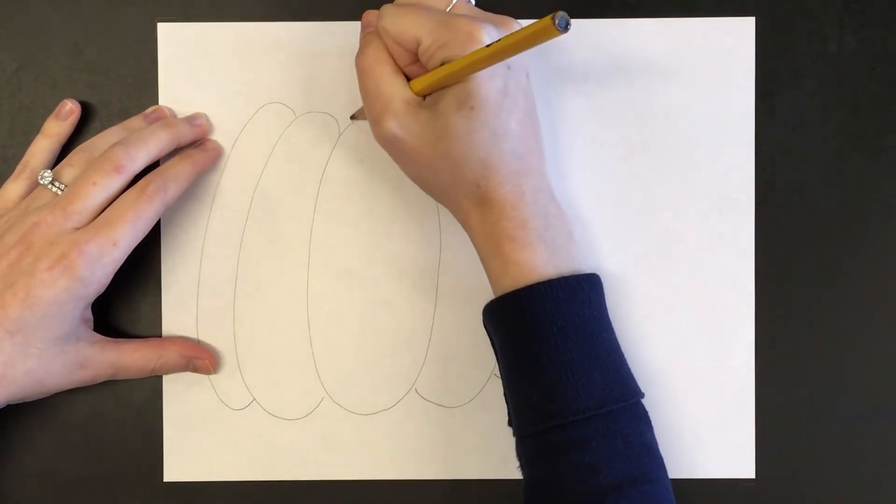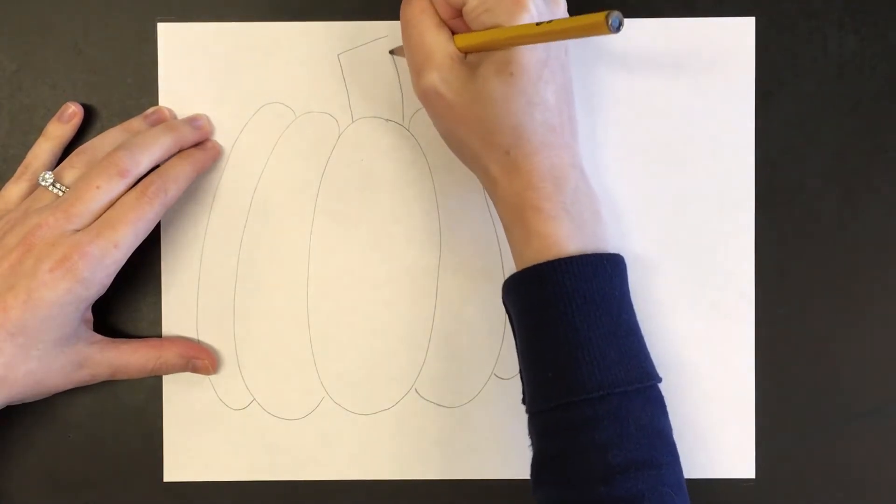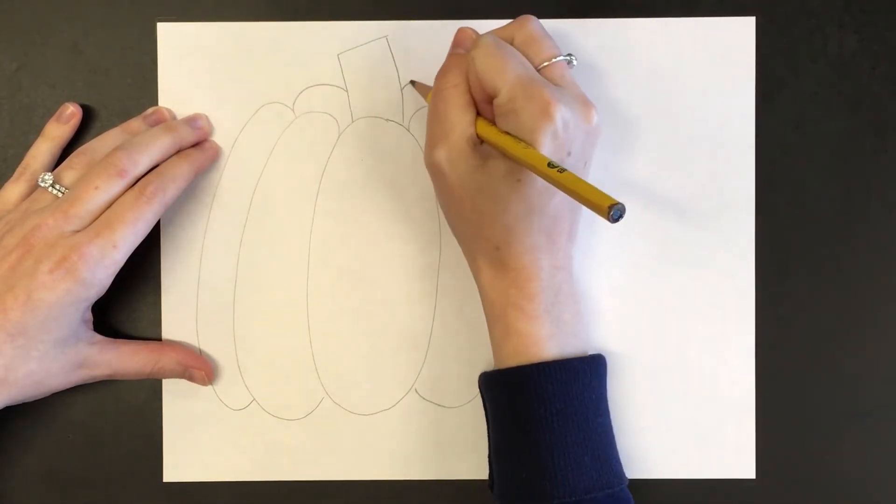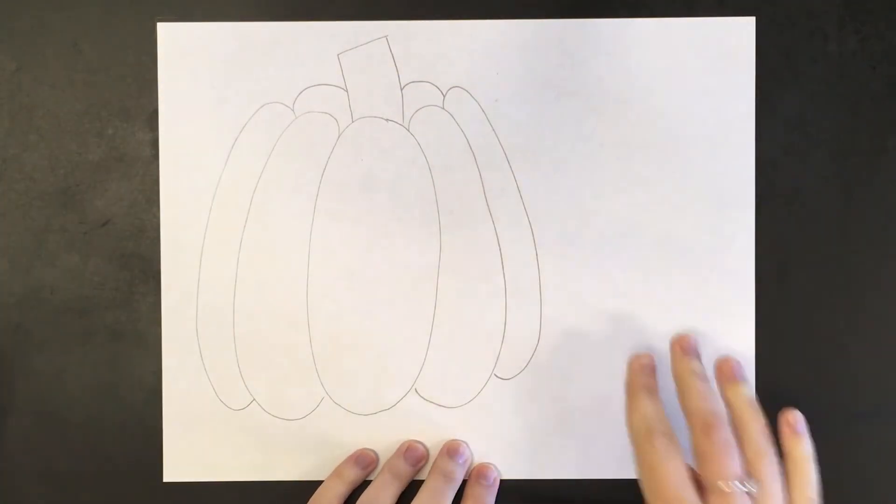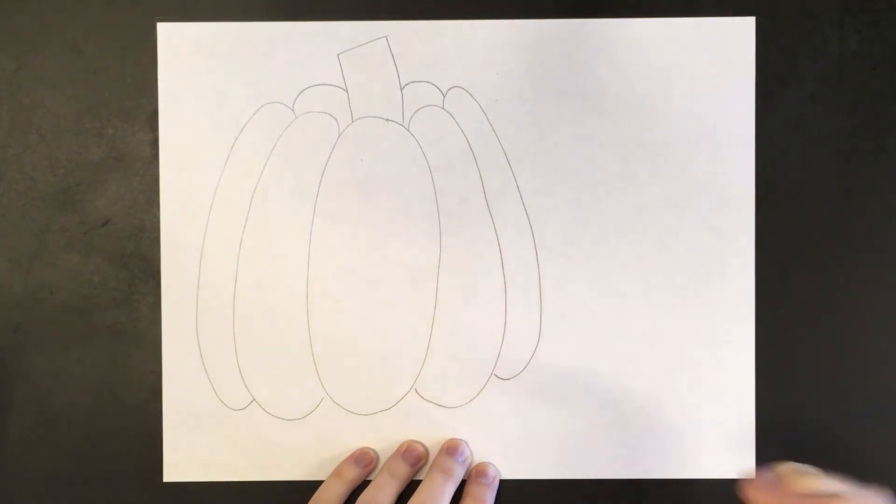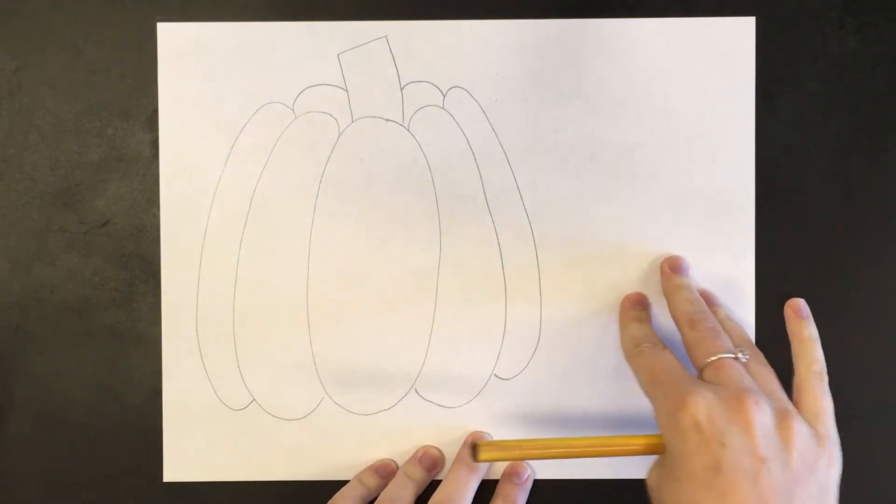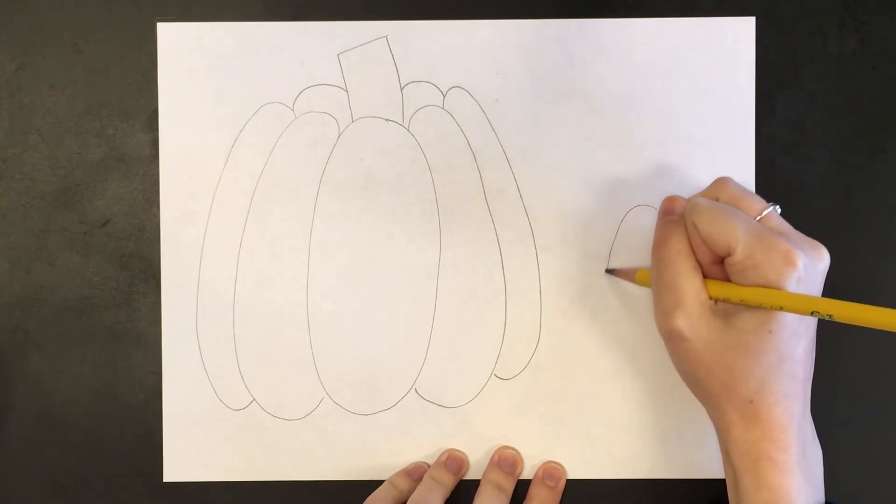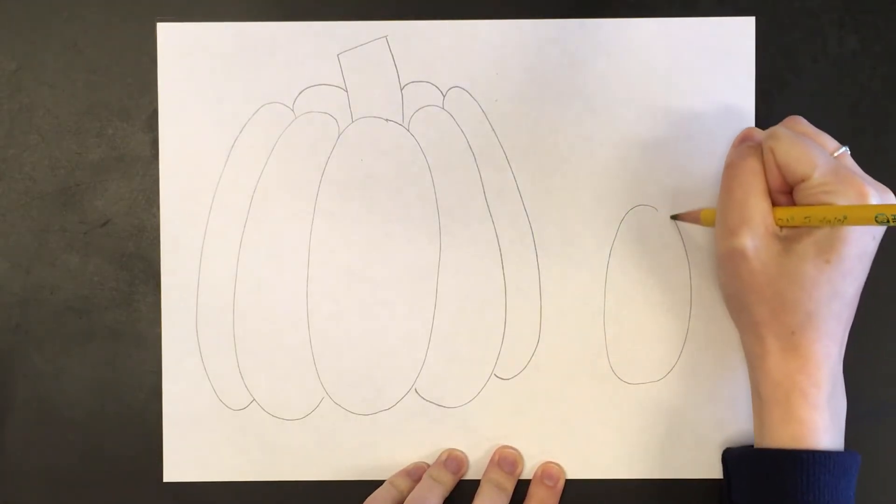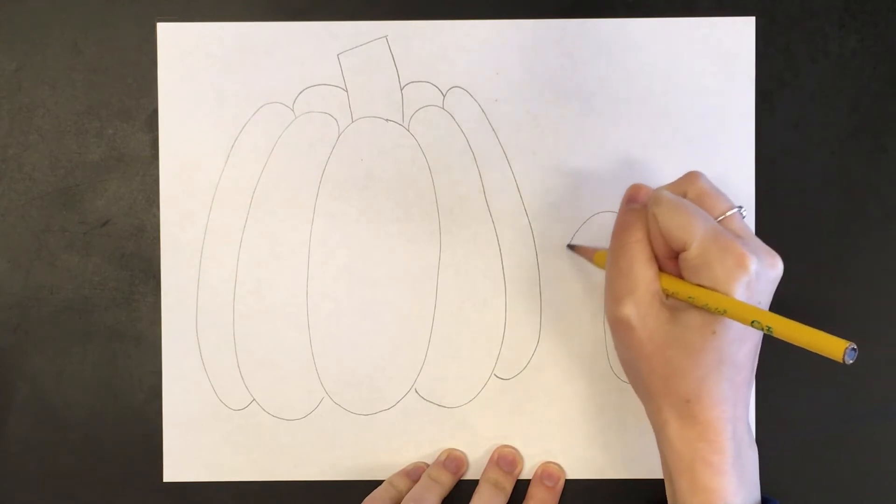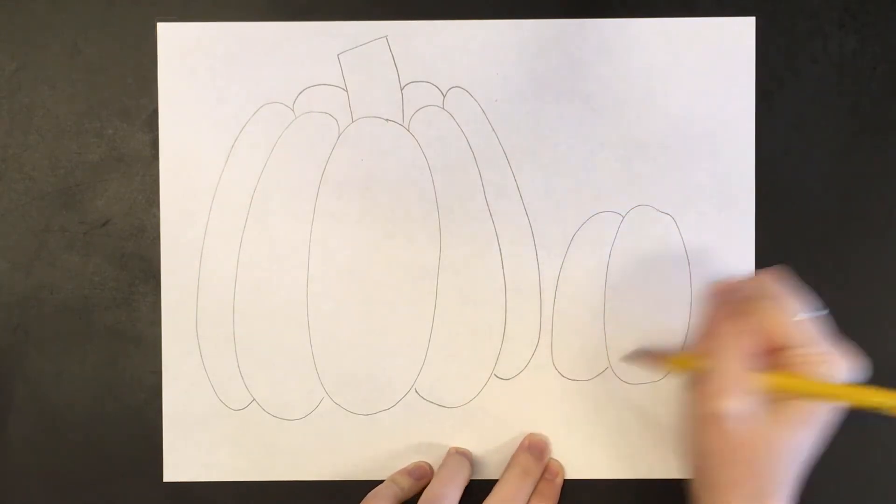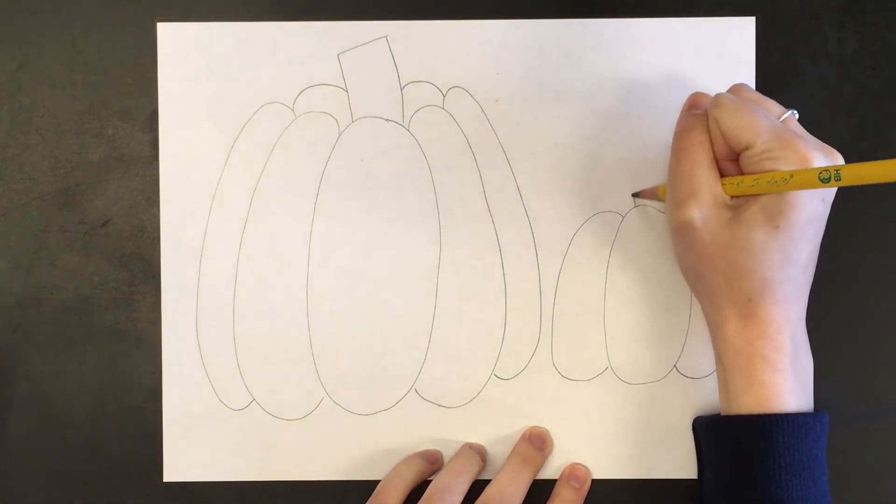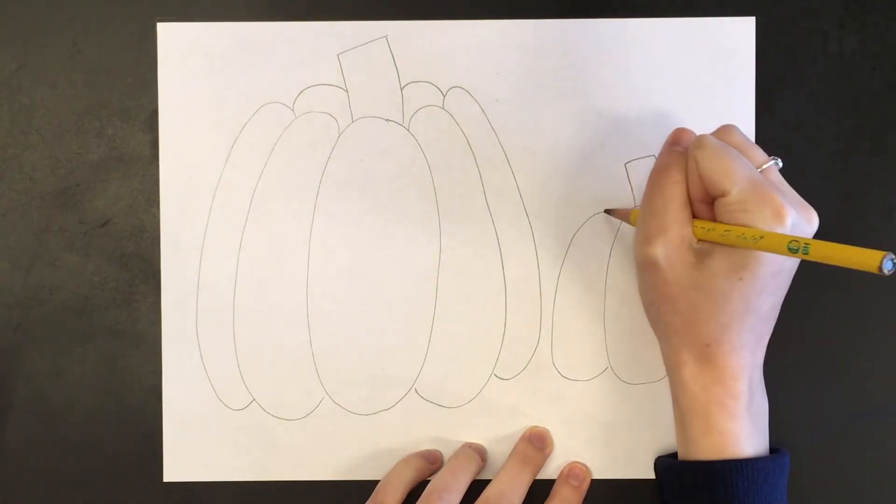Then I'm going to add in the stem on my pumpkin and I'm going to put a couple more curvy lines back here for the back part of my pumpkin. Looks like I have room here for one smaller pumpkin so I'm going to draw a smaller one that's sitting behind this pumpkin. So I'm going to do the same type of thing but make it smaller. I'm going to start with my long skinny oval, then I'm going to draw the rest of my pumpkin. Maybe this one will be a little bit smaller. Do my stem and the curvy lines.